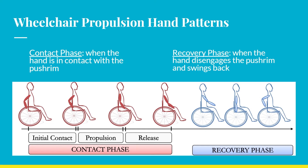Preventing shoulder pain is extremely important in individuals with SCI because they rely so heavily on shoulder function for mobility. Any propulsion hand pattern can be broken into two phases: the contact phase, when the hand is in contact with the pushrim delivering mechanical energy to the wheelchair — recruiting muscles like the pec major and anterior deltoids — and the recovery phase, when the hands disengage the pushrim and swing back to initiate the next cycle, requiring a pulling movement and recruiting most of the posterior upper extremity musculature.